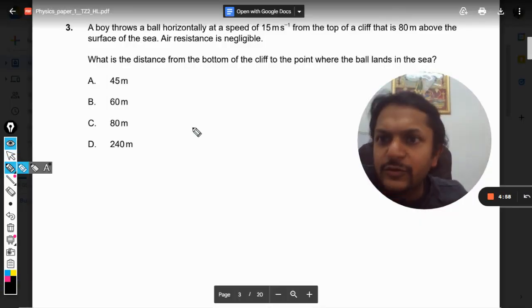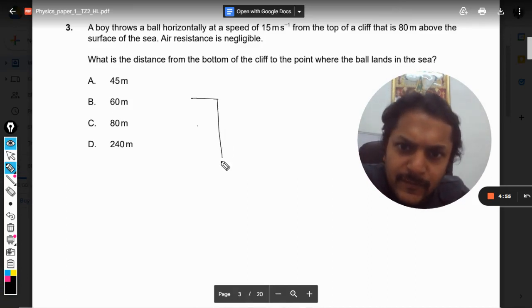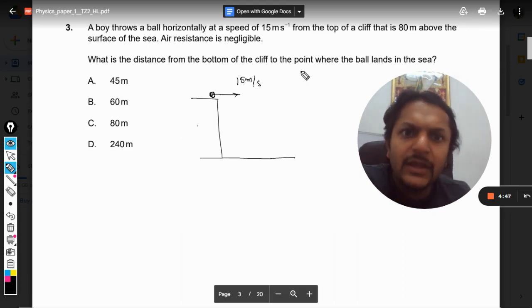Okay, so what is in this question? A boy throws a ball horizontally at a speed of 15 meters per second from the top of a cliff which is 80 meters high. Air resistance is negligible. What is the distance from the bottom of the cliff to the point where the ball lands in the sea?